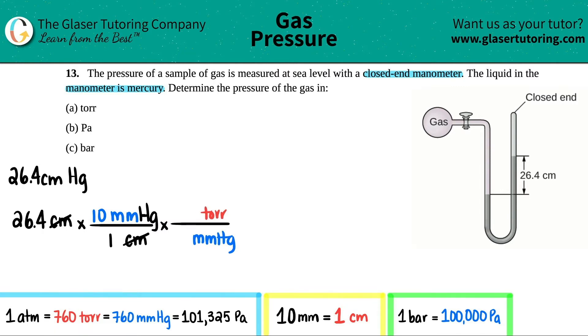760 torr equals 760 millimeters of mercury, so in essence they're the same number. I could say one torr equals one millimeter of mercury. I'm going to say 760 torr equals 760 millimeters of mercury. Millimeters of mercury gets canceled and now we're ending at torr. All we have to do is 26.4 times 10. 26.4 times 10 is 264 torr, and that's our first answer.